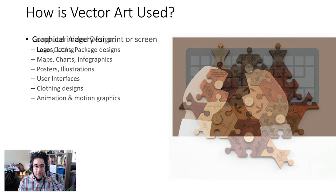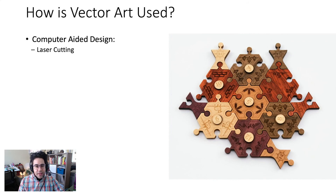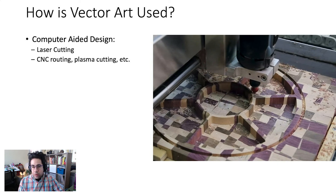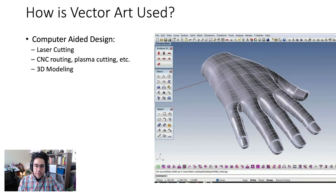The other main area for using vector art is within computer-aided design — essentially, using digital designs to make physical objects. For example, a laser cutter is very commonly controlled with an Illustrator file. Other similar processes can be controlled with vector art, including CNC routing, plasma cutting, water jet cutting, and other robotically controlled cutting processes. And lastly, many forms of 3D modeling are based on vector art, which can open the doorway to things like 3D printing and fabricating physical objects from vector art designs.